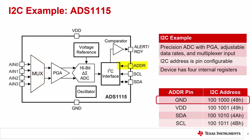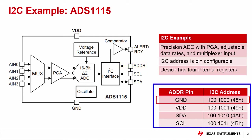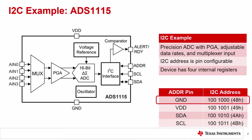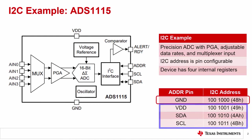The ADS-1115 has an address pin labeled ADDR. This pin can be used to select one of four I2C addresses, meaning that four of these devices could be used on the same bus as long as the devices are programmed to different addresses. The I2C address used for the device depends on the ADDR pin connection. With the ADDR pin connected to ground, the device has an I2C address of 0x48. With the ADDR pin connected to VDD, SDA, or SCL, the device can be set to other addresses shown in the table.